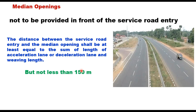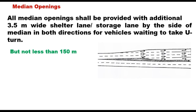All median openings shall be provided with an additional 3.5 meter shelter lane or storage lane by the side of the median in both directions for vehicles waiting to take a U-turn. This is what we call the deceleration lane and storage lane. Wherever required, horizontal geometrics of the road shall be suitably adjusted to provide this storage lane.